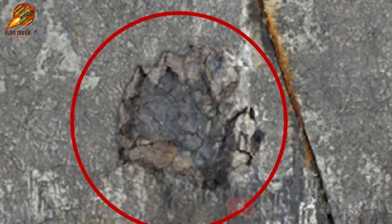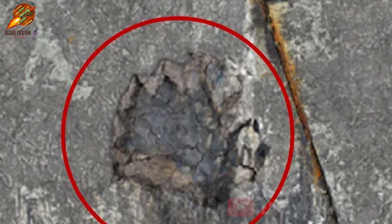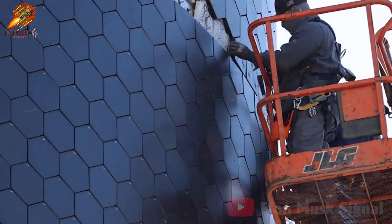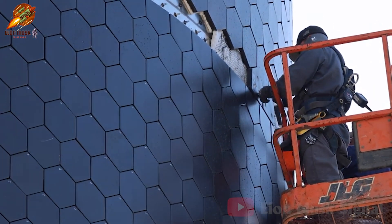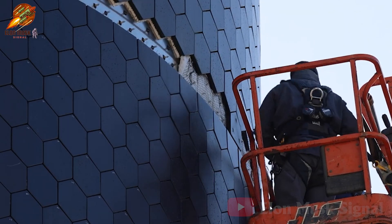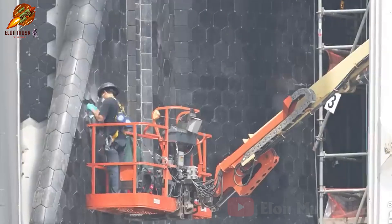However, a drawback is that the material gradually degrades, which is not ideal for reusable vehicles. Currently, SpaceX is in the process of removing the entire old heat shield of Starship and replacing it with a new version. This unprecedented overhaul involves manually replacing over 18,000 tiles.